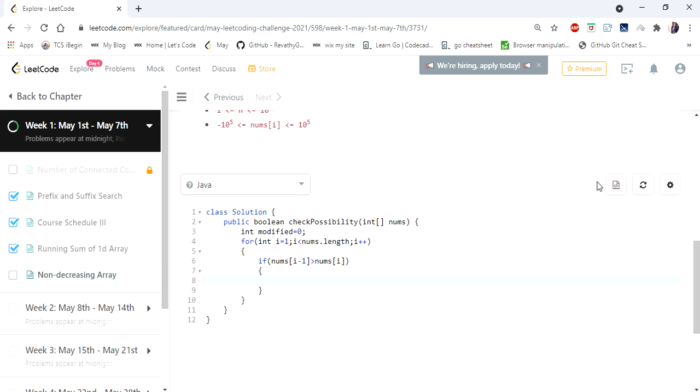Since it needs a modification obviously we are going to increment our count. Once incremented we are straight away going to check if it exceeds 1 then we are straight away returning false.